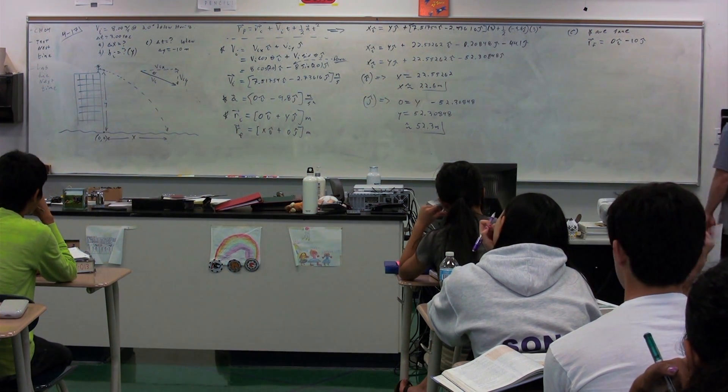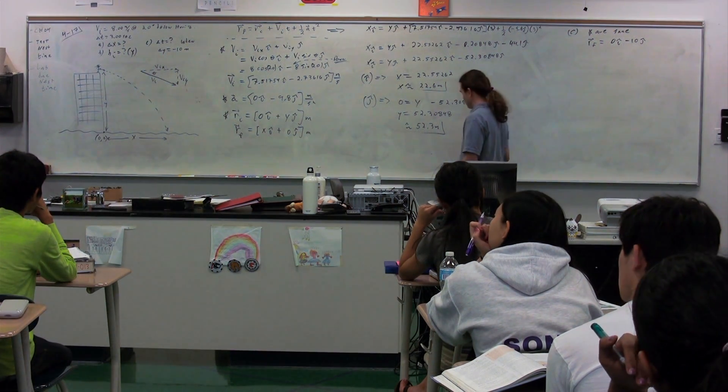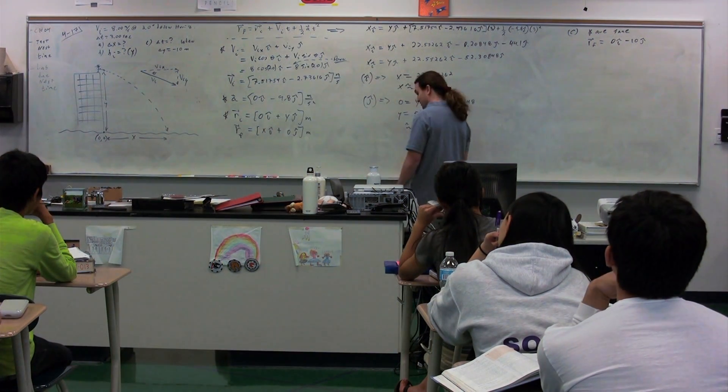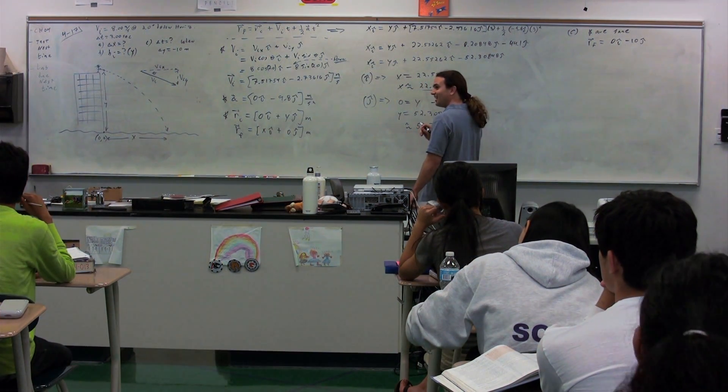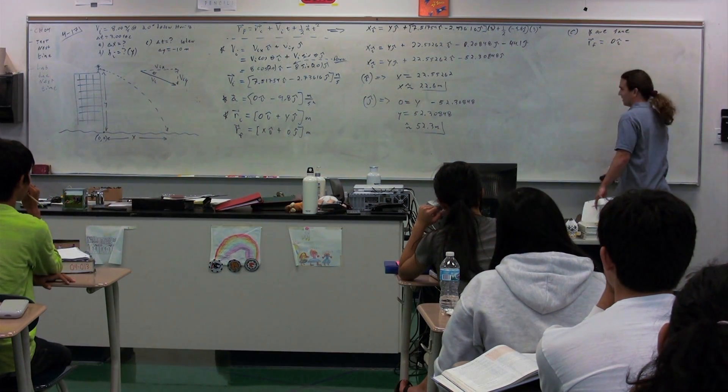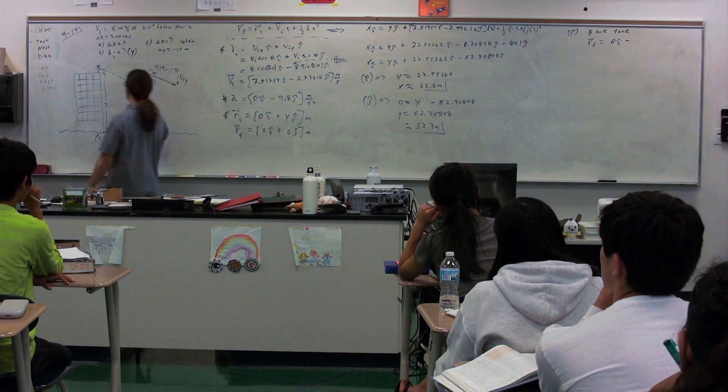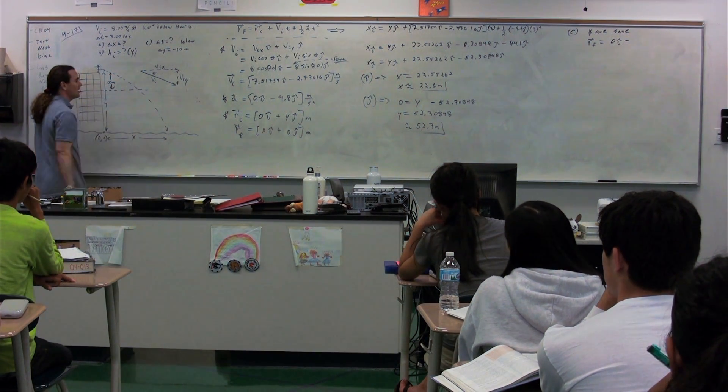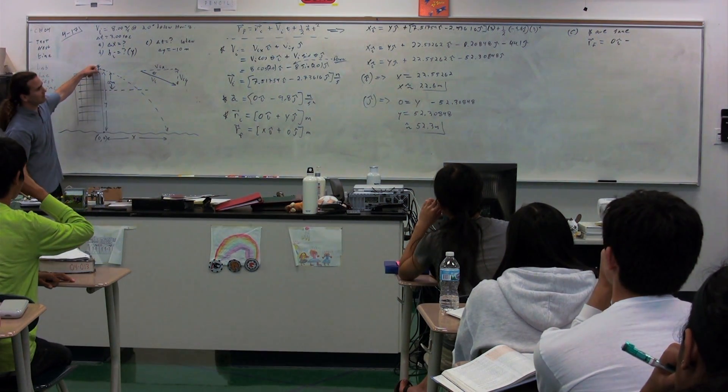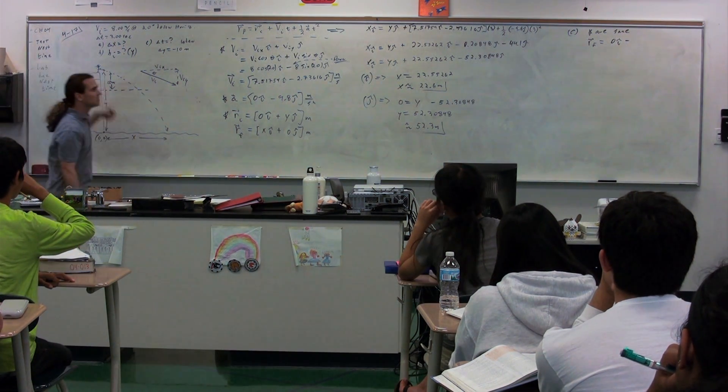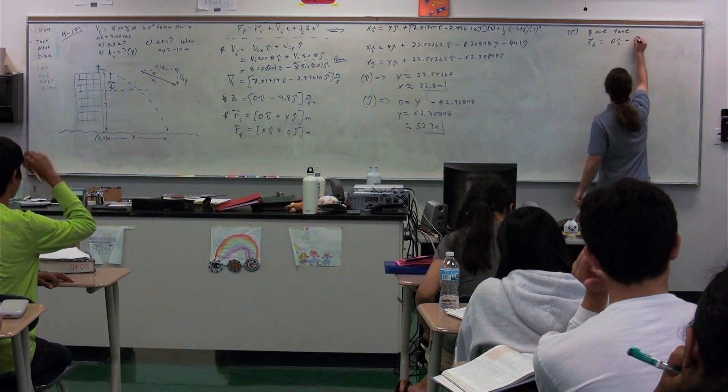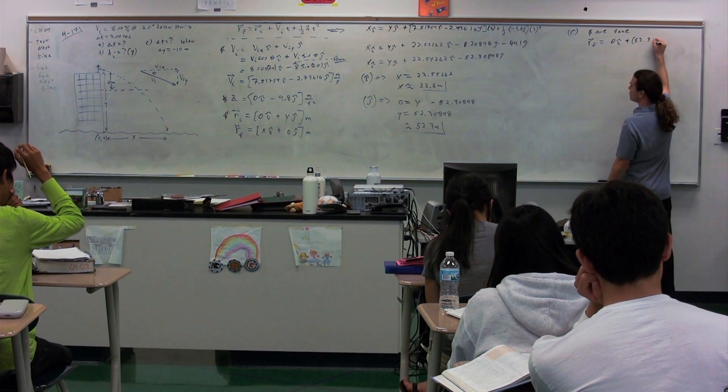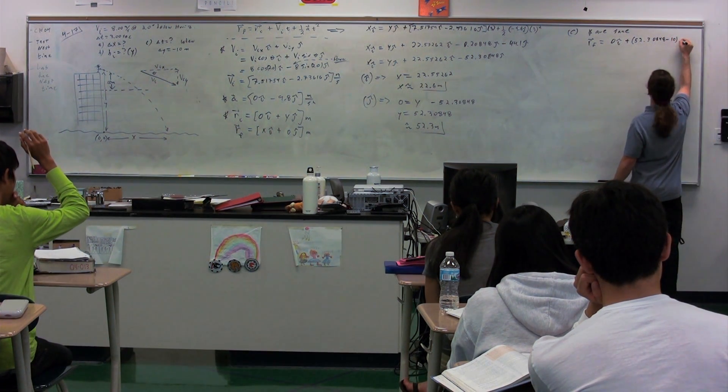Heather? I take the y-value for the previous part and subtract 10 from that. Because the question is, how much time does it take for it to go until it's gone 10 meters down. Well, we know initially it starts at 52.30848 meters. So the position final here is going to be 52.30848 minus 10j.